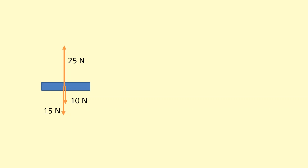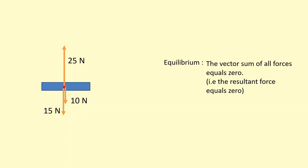So far up to this point, we've been assuming that all the forces acting on an object have been acting through a single point. In this case, 25 newtons upwards and 25 newtons total downwards, so the resultant force equals zero. We can say that the vector sum of all the forces equals zero, which is the same as saying the resultant force equals zero, and it's in equilibrium.